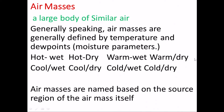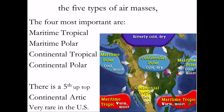There are five types of air masses: maritime tropical, maritime polar, continental tropical, continental polar, and continental arctic. As far as which ones affect most of North America, it's usually these four: maritime polar, continental polar, maritime tropical, and continental tropical.